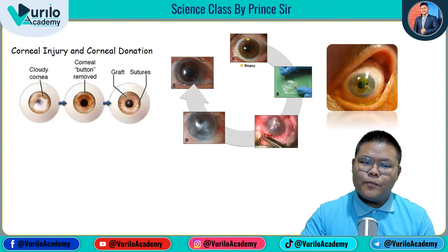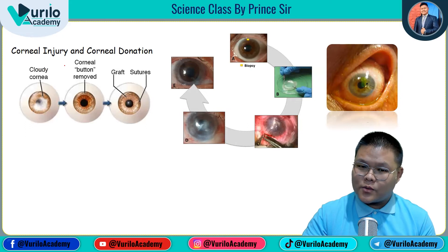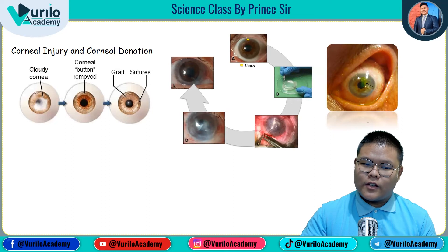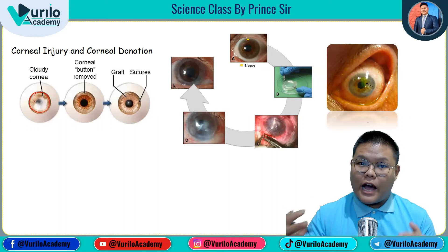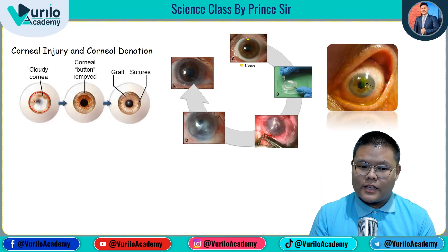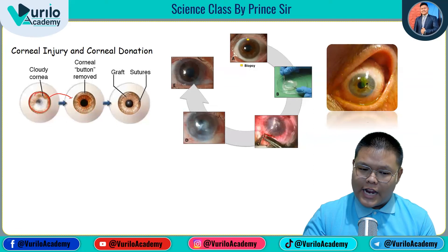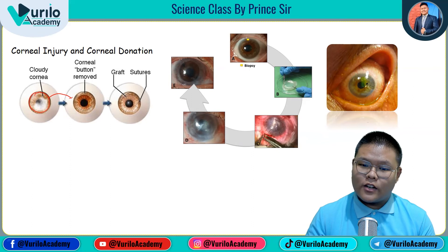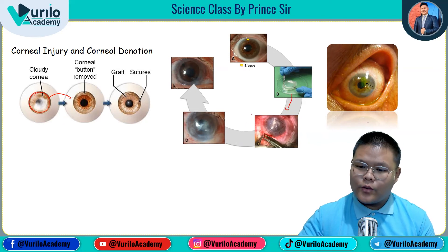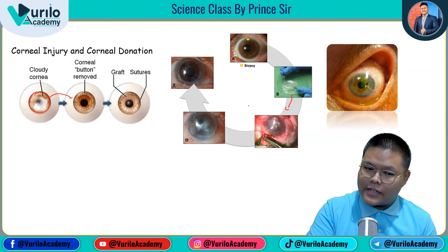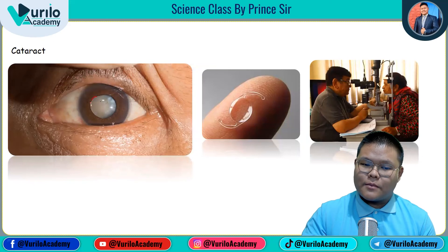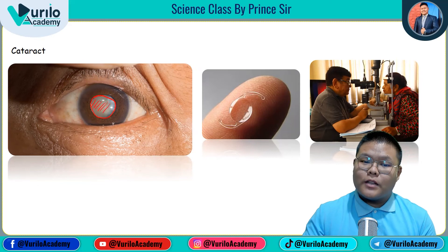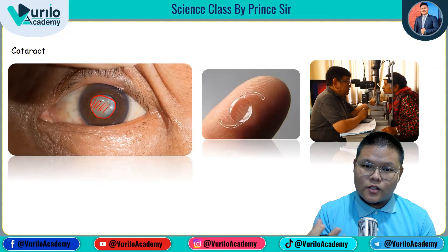Now, corneal injury and corneal donation: when you hear about eye donation, the reason is that the cornea is the only protective layer that can be donated. If someone's cornea is injured, it becomes cloudy — called a cloudy cornea — and the person cannot see clearly; they see blurry or foggy images. The cloudy cornea is carefully removed and a donated cornea is applied by a doctor.